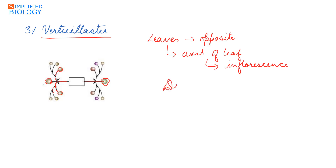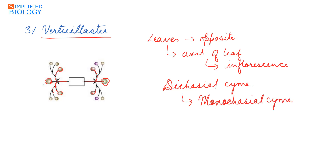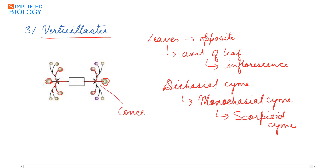After the initial dichasial cyme, a scorpioid cyme is seen — that is, at first a dichasial cyme develops where two branches arise in opposite directions terminating by a flower, and after that a monochasial cyme develops where a single branch develops in a zigzag fashion. The pedicels of the flowers are so small that the flowers appear to be concentrated at the nodes.